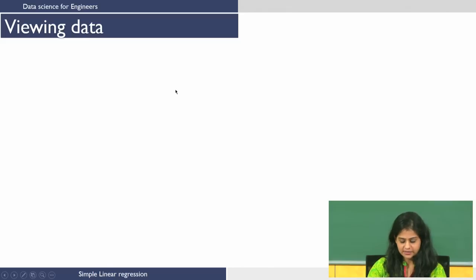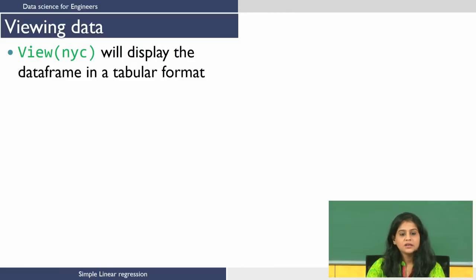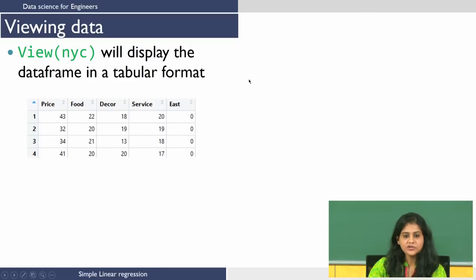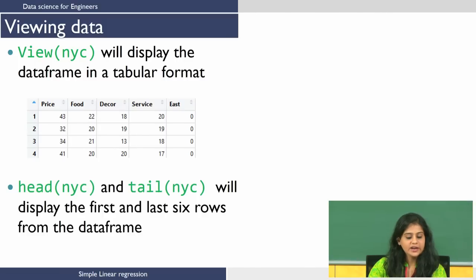Let us see how to view the data. view(NYC) will display the data frame in a tabular format, showing variables: price, food, decor, service, and east. If your data is really huge and you do not want to view the entire data, we can use the head or tail function. head will give you the first 6 rows from a data frame and tail will give you the last 6 rows.